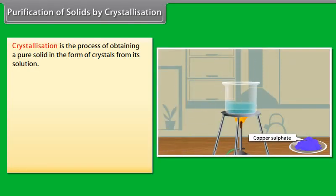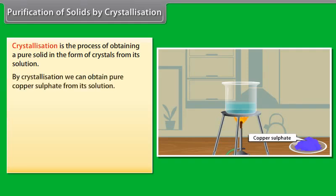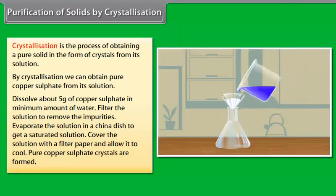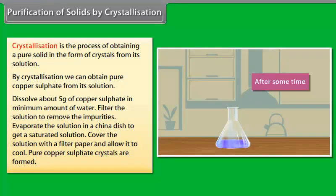Purification of solids by crystallization. Crystallization is the process of obtaining a pure solid in the form of crystals from its solution. By crystallization we can obtain pure copper sulfate from its solution. Dissolve about 5 grams of copper sulfate in minimum amount of water, filter the solution to remove the impurities, evaporate the solution in a china dish to get a saturated solution, cover the solution with a filter paper and allow it to cool. You will see pure copper sulfate crystals are formed.